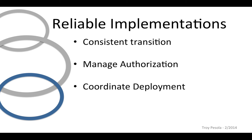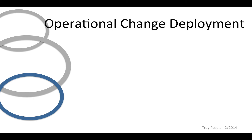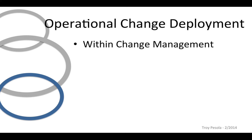We also need a way to coordinate deployment activities once authorization is granted, so we know that the right people are doing the right things at the right times. We need a way to track the results so we can look back over time to determine which transitions were successful and which ones need to be improved if done again. This process is operational change deployment — the third of the release and deployment management processes. As the name implies, it's embedded within change management — almost a subset of it. If you read ITIL's change management volume, you'll see deployment activities referenced multiple times.